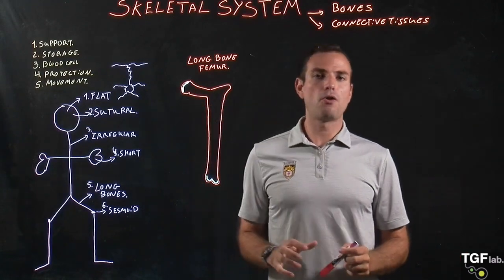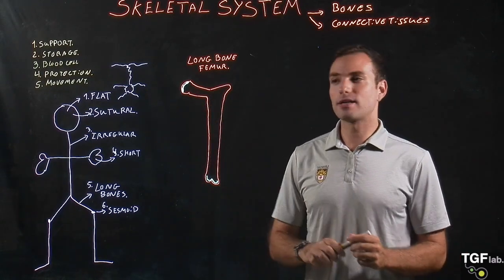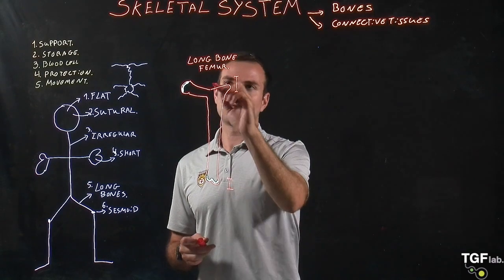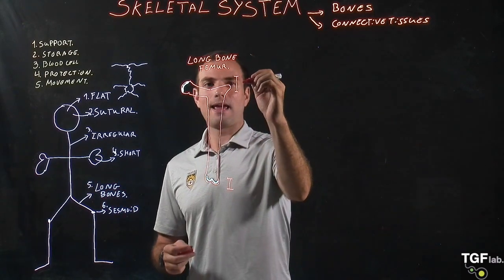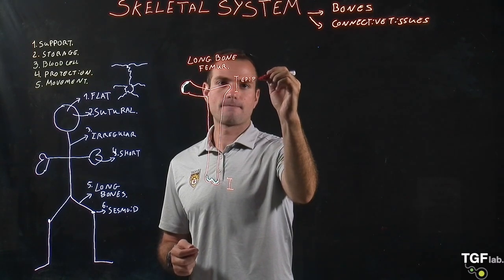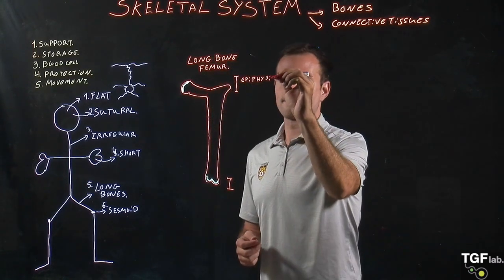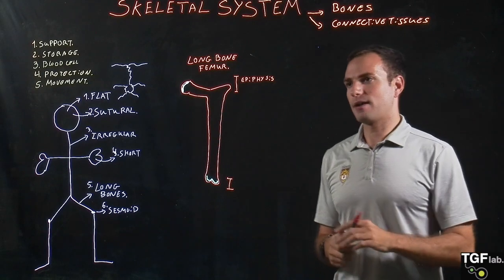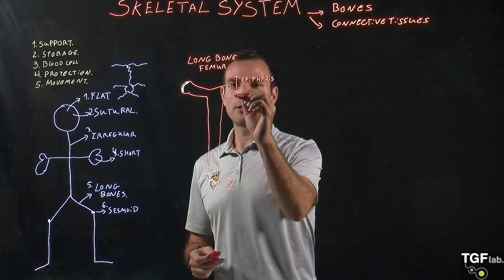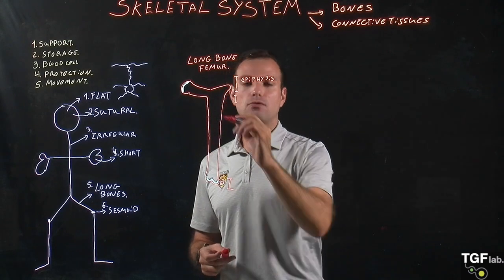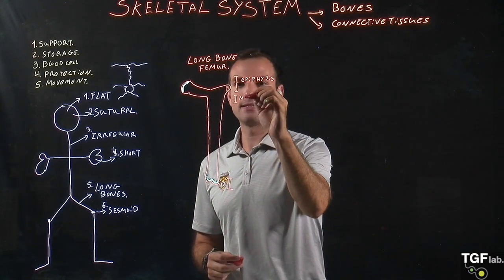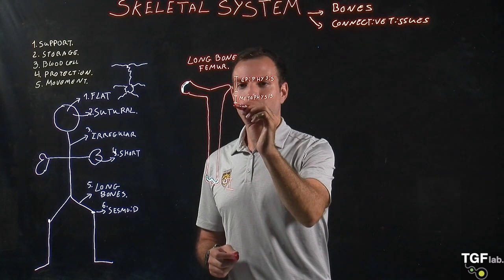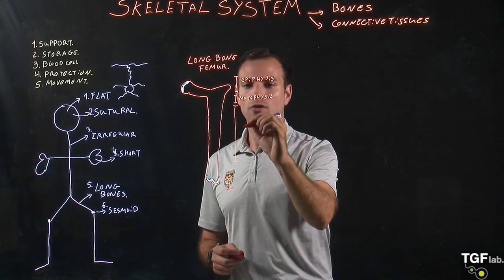If we look at long bones, specifically the femoral bones, we have different parts. First we have the sections at the ends, which are called the head or the epiphysis — these are the parts of the bone on opposite sides. Then we have the part that connects the center of the bone to the extremes, which is called the metaphysis. And finally we have the center of the bone, which is called the diaphysis.